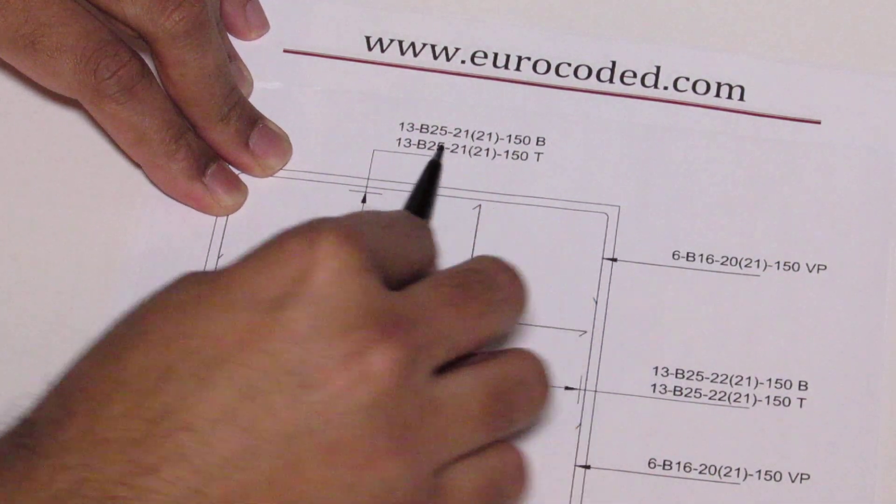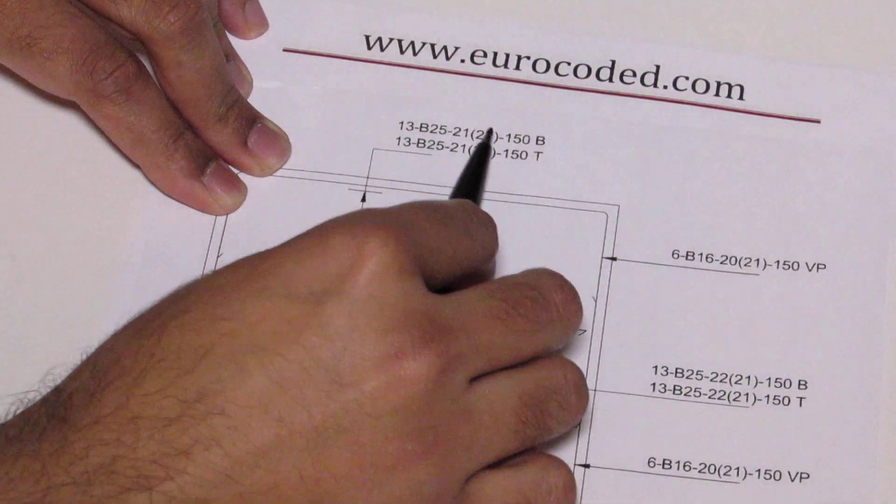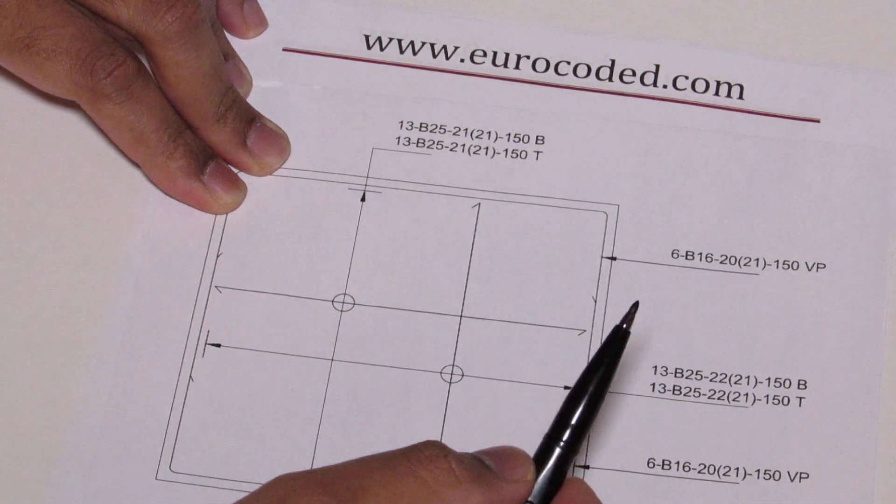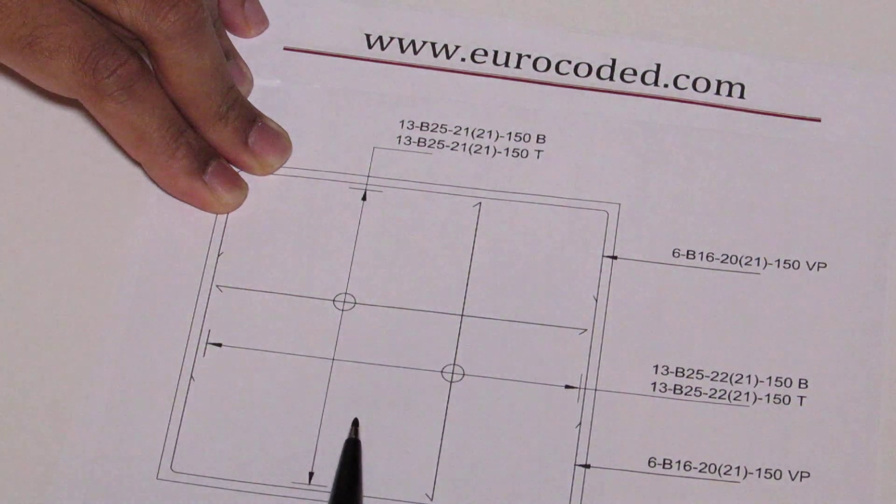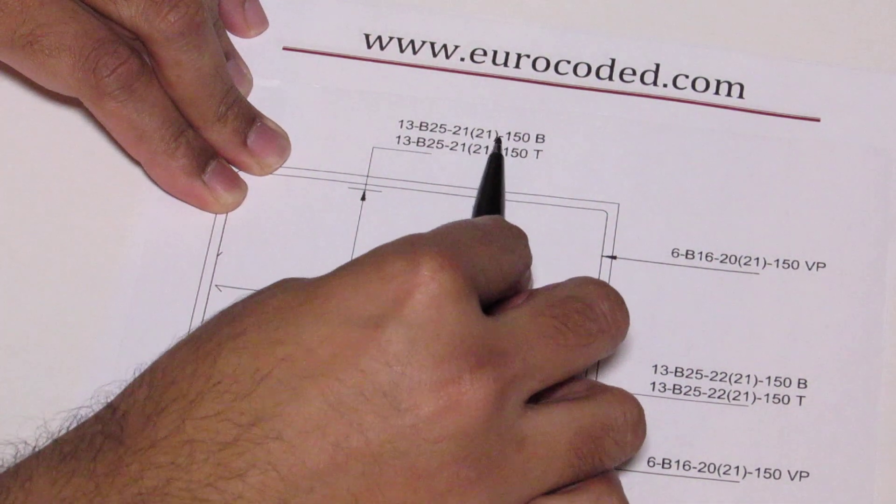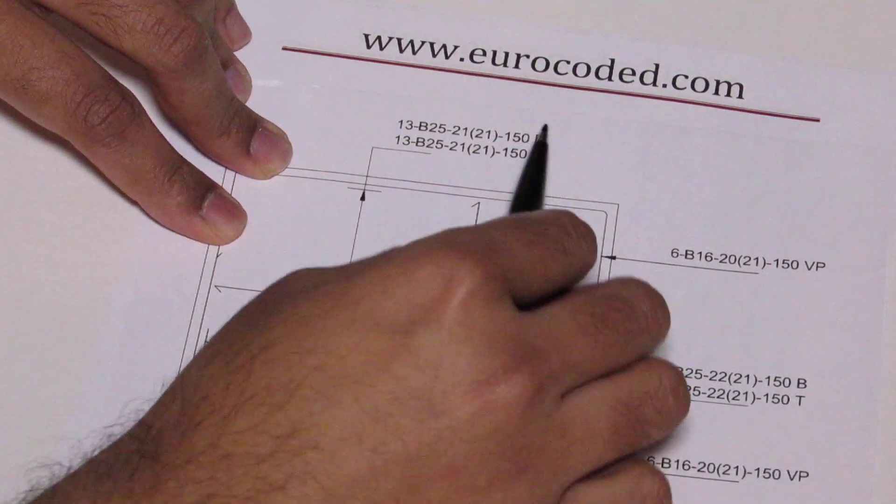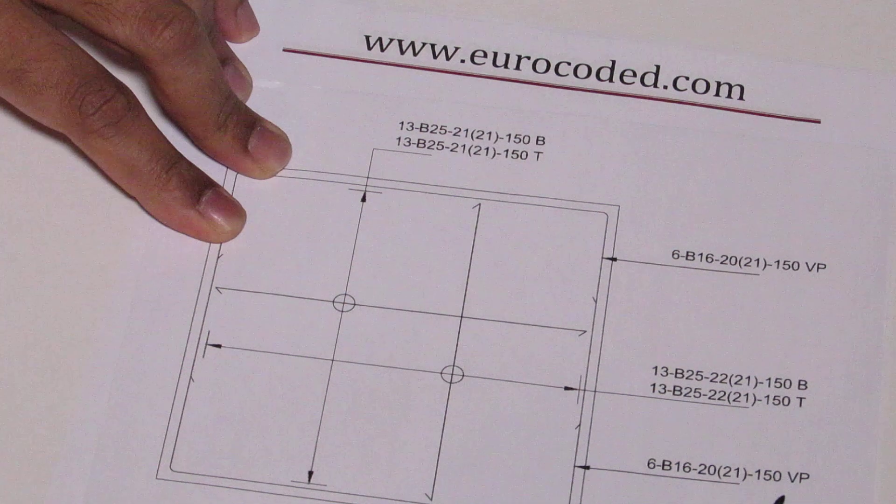And then the third one is the bar mark again. Within this bracket you have the shape code which defines what shape this particular bar is. And then you have 150, that is the spacing between bars. In this particular case it is 150 millimeters between two bars.